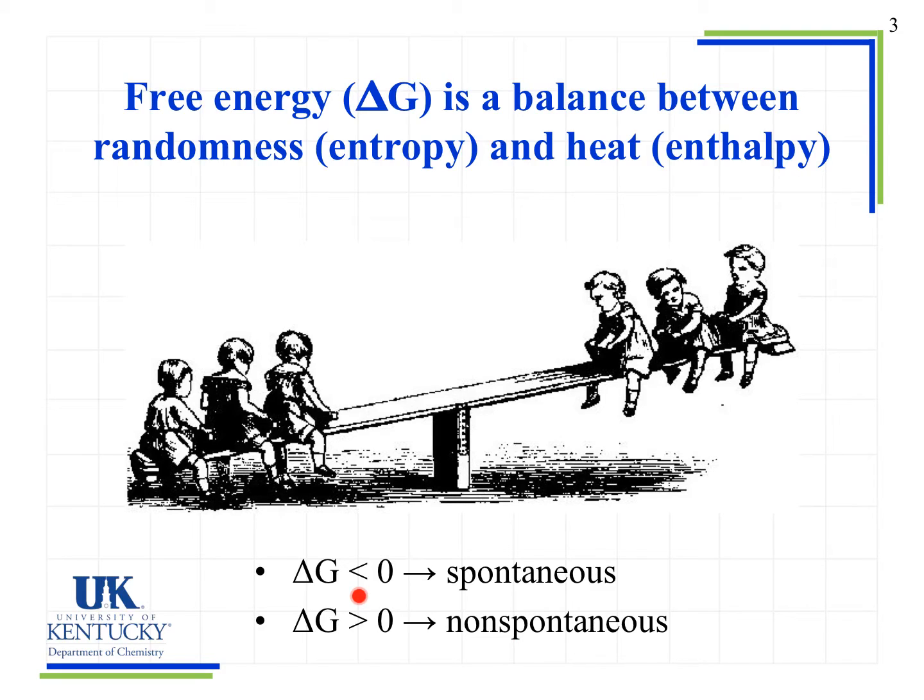So when delta G is less than zero, a negative value, it is a spontaneous reaction. When delta G is greater than zero, it is a non-spontaneous reaction. So by knowing the sign convention, we can determine whether a reaction will be spontaneous or not.